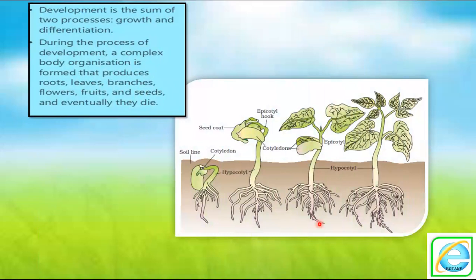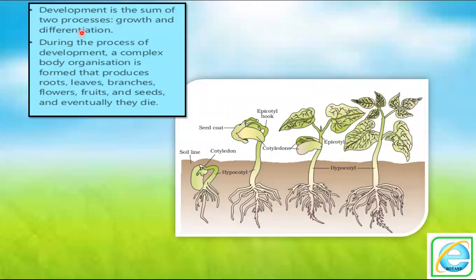Development is nothing but the sum of two processes — one is growth and second is differentiation. Growth is an irreversible permanent process with an increase in cell size, mass, and volume. Differentiation means these cells develop a specialized function at a particular location.